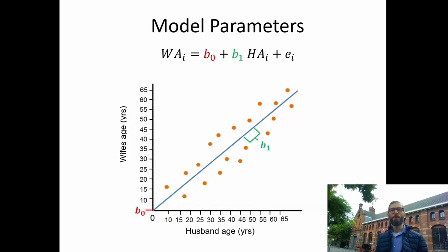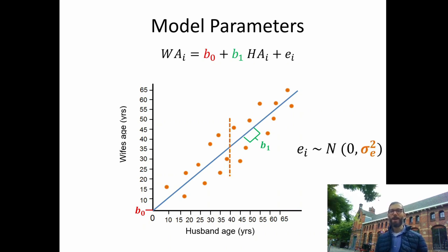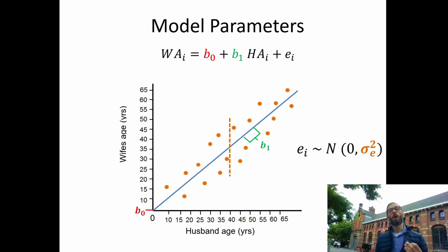The parameters of a model are anything we have to estimate — in this case the intercept and the regression slope. The intercept b0 is the point at which the regression line intersects the y-axis. The regression slope tells us how many years the expected value of the wife's age increases if we increase the husband's age by one year. The prediction errors epsilon sub i are assumed to be normally distributed around zero with a variance equal to the residual variance, meaning all individual data points are normally distributed around the regression line. This residual variance can be interpreted as the unexplained part of the variance.